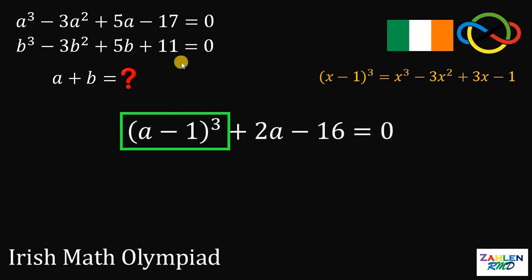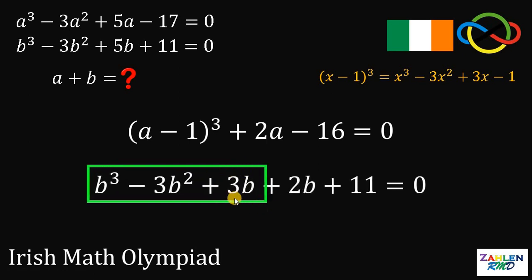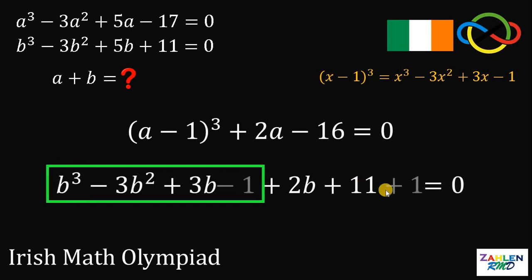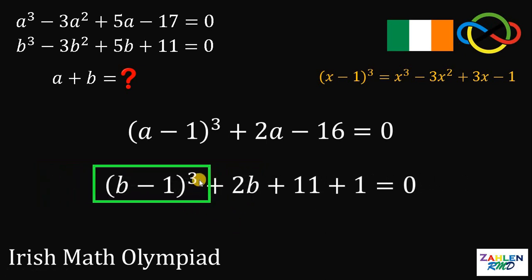Now, let's get the second equation and we will do the same thing. So let's focus on these first two terms, B cubed minus 3B squared. We want 3B, so let's break this 5B into 3B plus 2B. Now we have 3B. And then, let's subtract 1 and of course, we need to add 1 to make it balance. This expression B cubed minus 3B squared plus 3B minus 1 can be written as B minus 1 raised to 3. Let's simplify. 11 plus 1 is just 12.